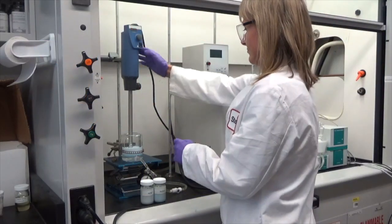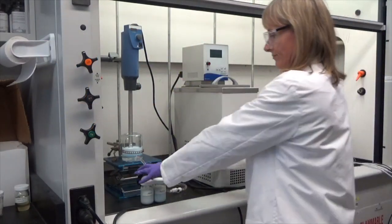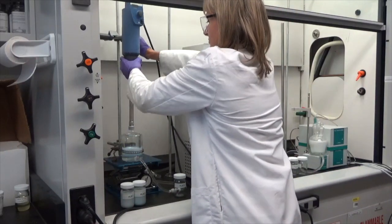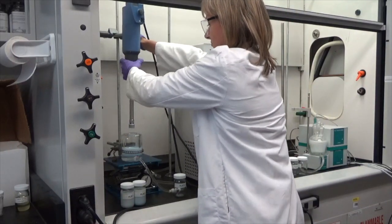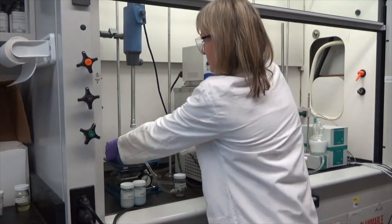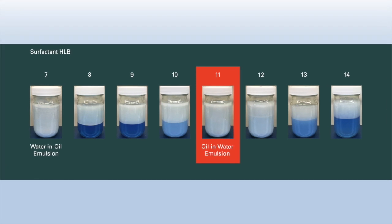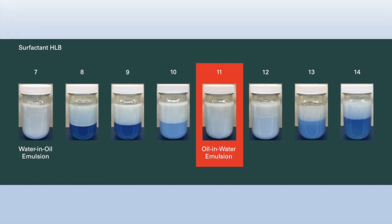When unknown, the HLB requirement for a particular formulation can be determined experimentally by screening surfactant blends of known HLB. Ideally, such testing is conducted under conditions closely matching those expected in product manufacturing. The HLB requirement is indicated by the most stable sample identified in screening.